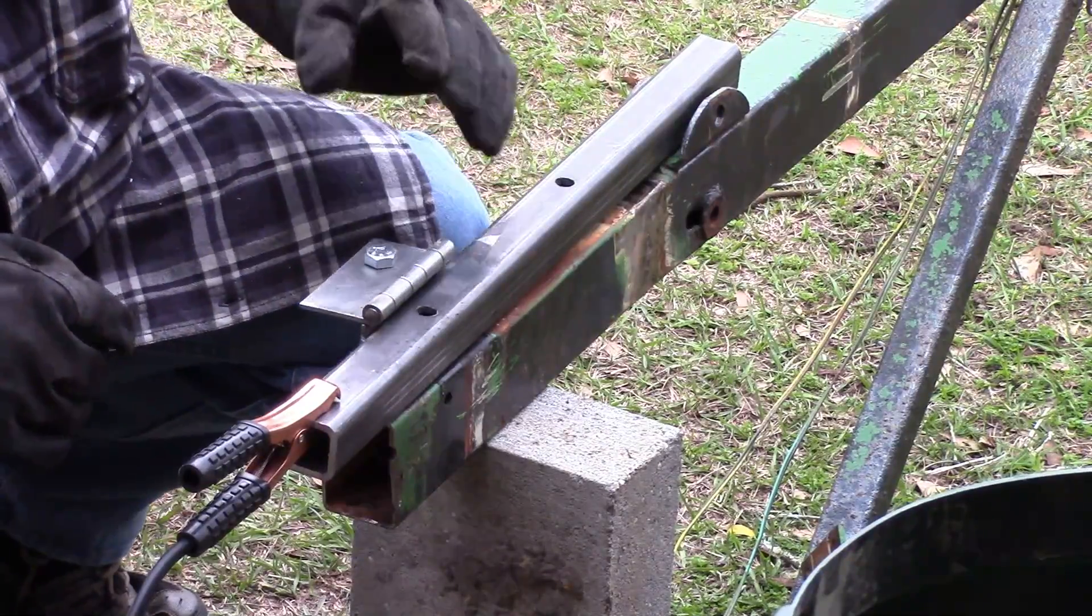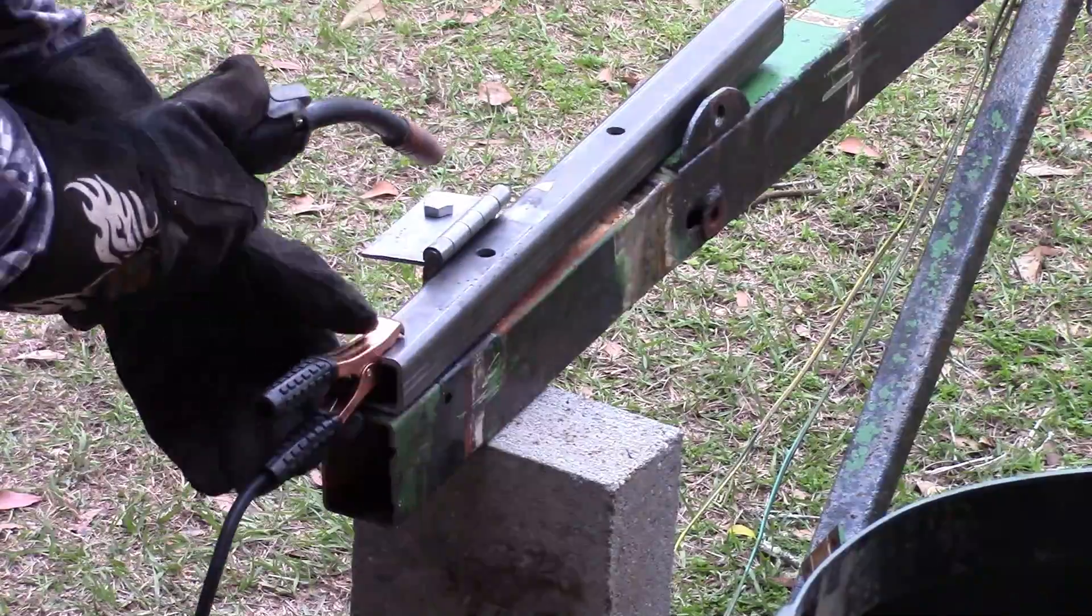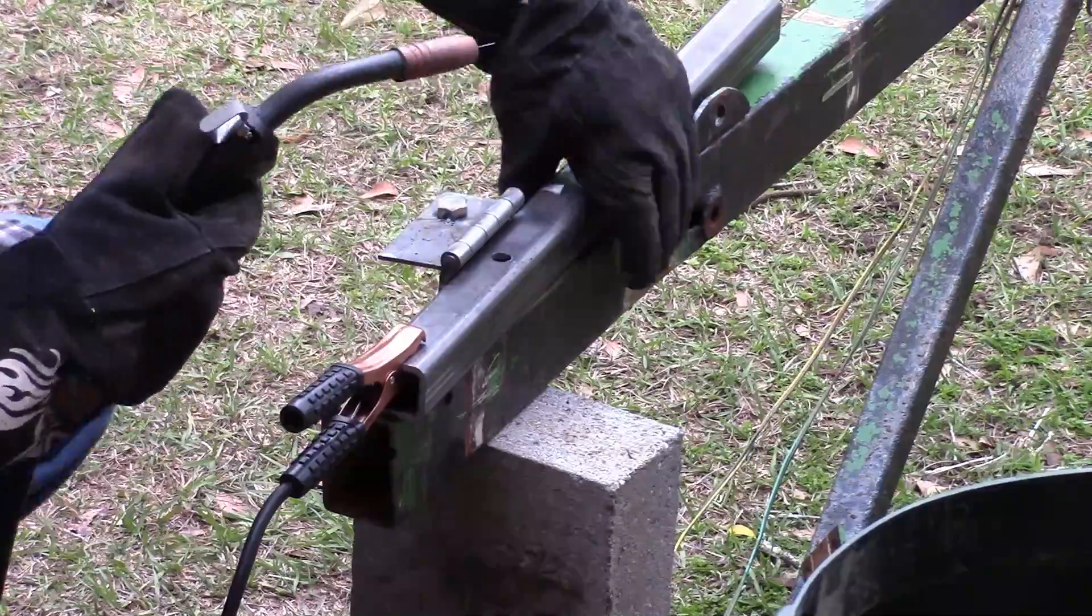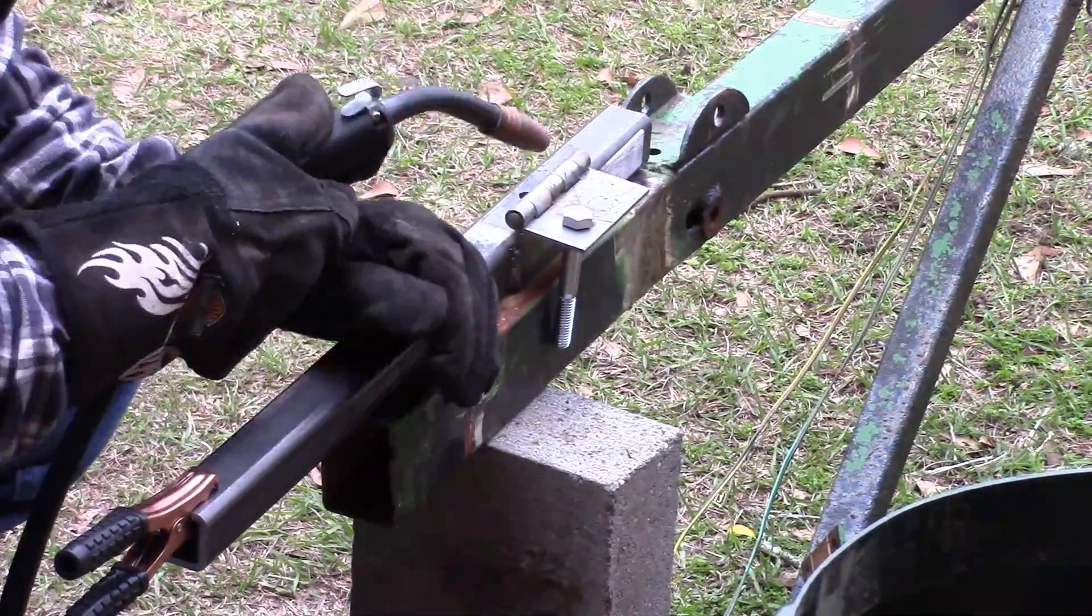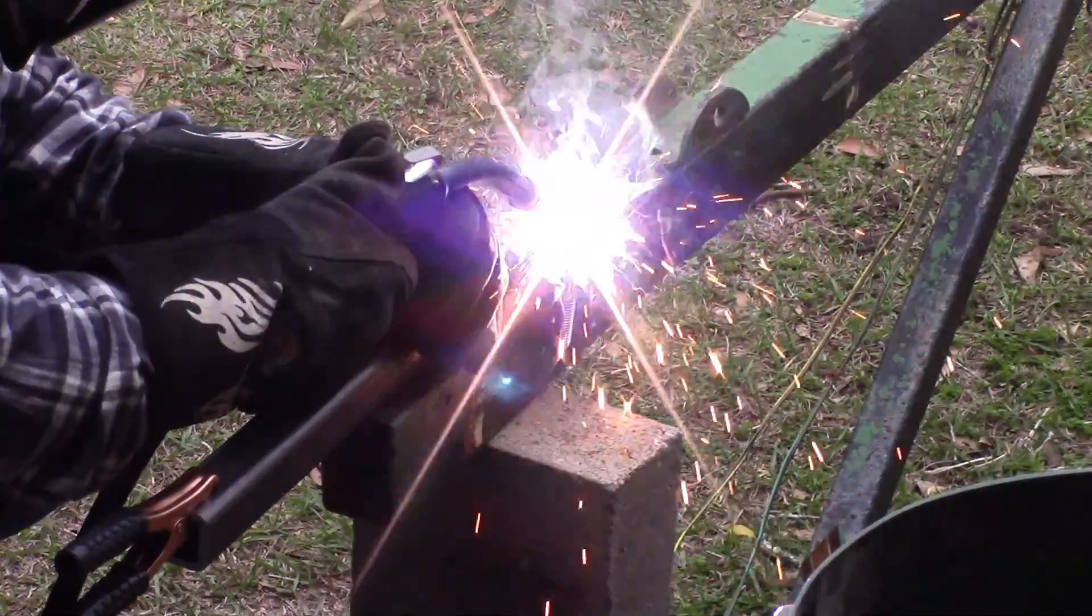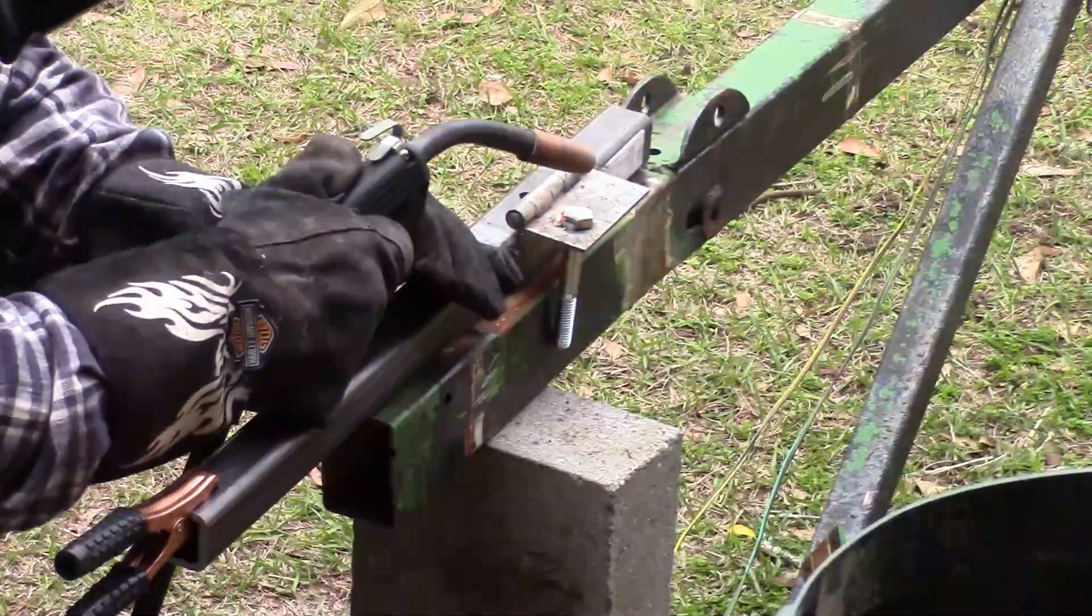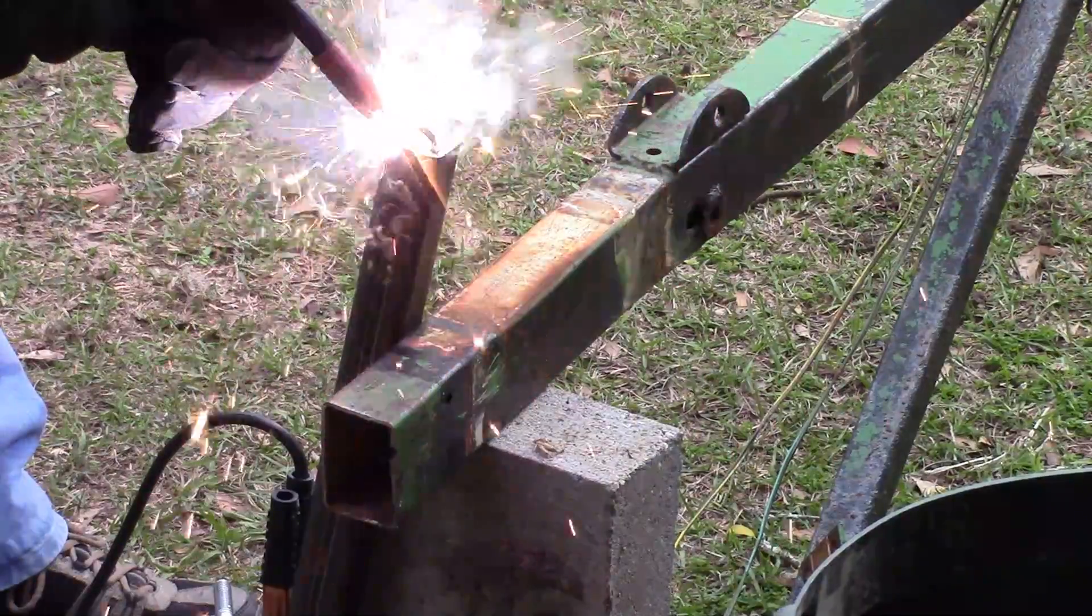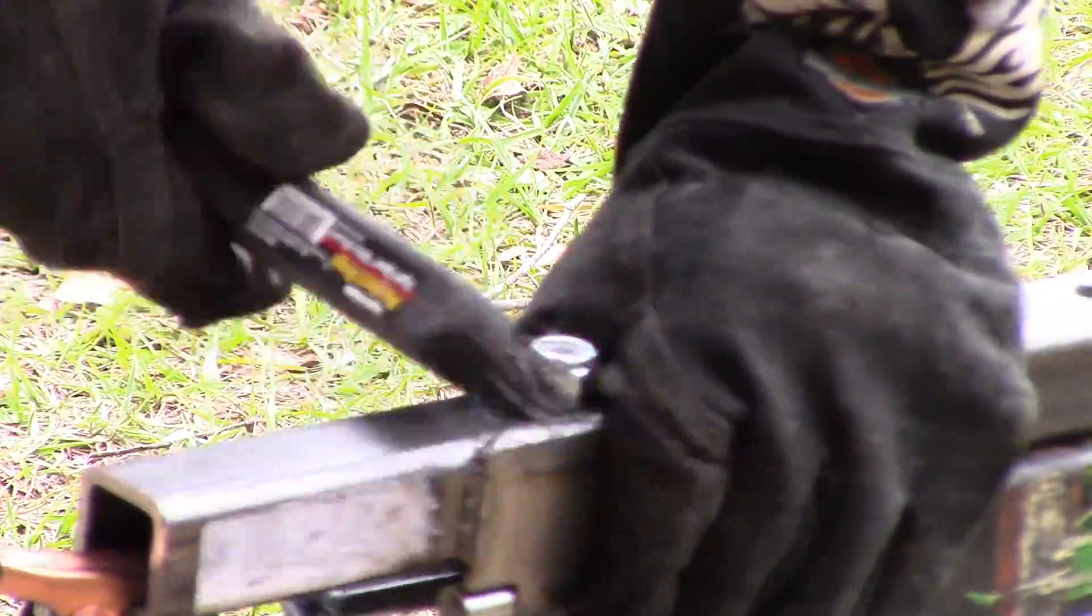I'm welding in the bolt that the idler wheel attaches to. I was originally going to use a spring to tension the belts so I welded on this ring. I later abandoned the spring and instead used a gas strut.